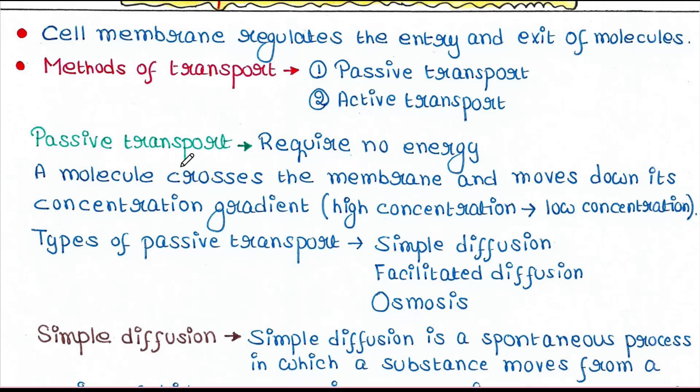Passive transport requires no energy. A molecule crosses the membrane and moves down its concentration gradient, that is from high concentration to low concentration. Energy is not required — that means ATP is not used — and the molecule crosses the plasma membrane from higher concentration to lower concentration.